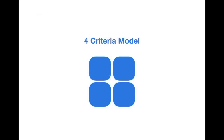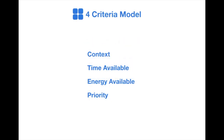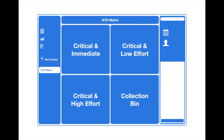Now let's move on to the four criteria model. The four criteria that we're talking about are context, time available, energy available, and priority. Comparing these four criteria to the Eisenhower methodology, we can blend the two together to create a GTD priority matrix model. On the top left we've got critical and immediate, top right critical and low effort, bottom left critical and high effort, and then bottom right the collection bin. This is a perfect blending of the four quadrant matrix plus the GTD method.